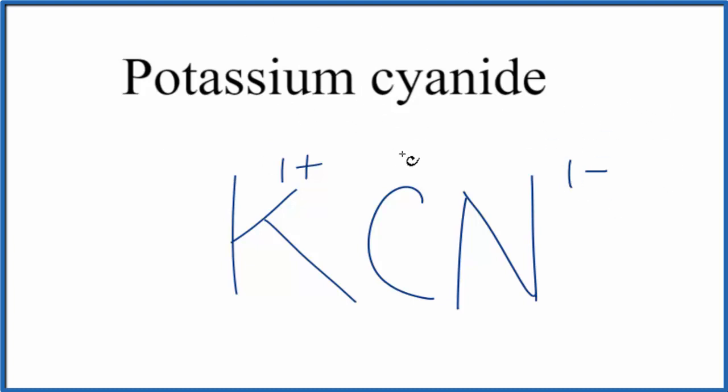have a neutral compound like potassium cyanide, all the oxidation numbers need to add up to 0. So here we have the 1 minus that's on the whole cyanide ion, and the potassium ion 1 plus. 1 minus and